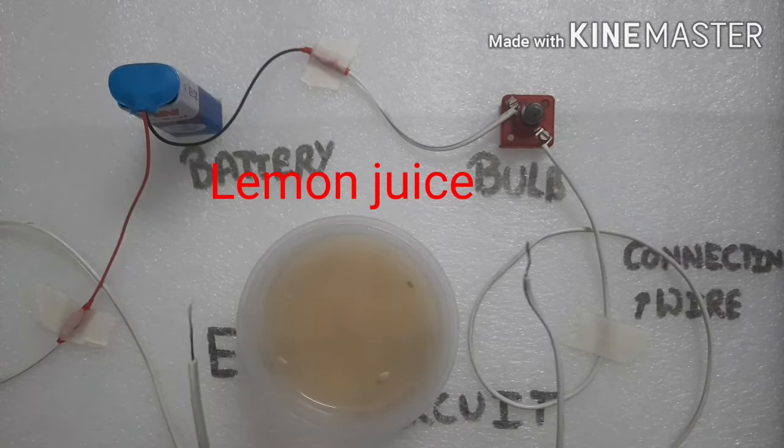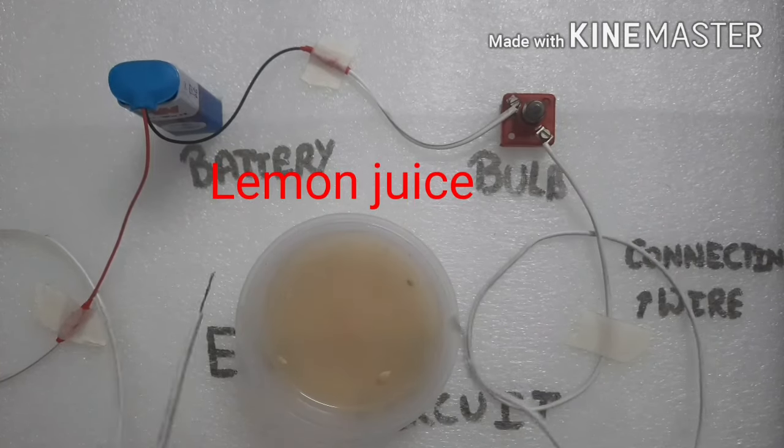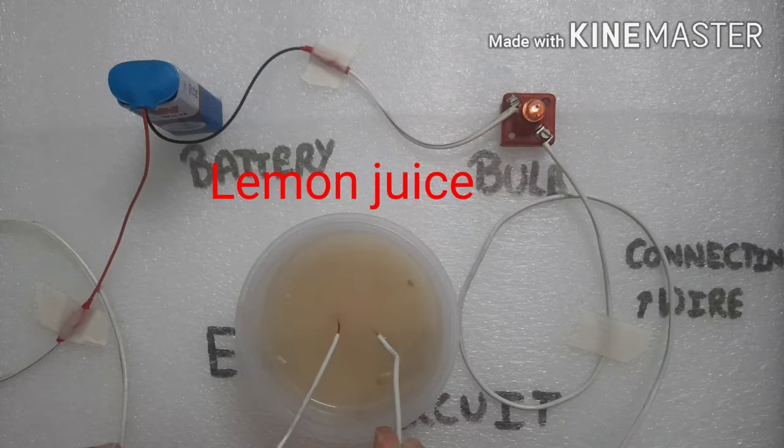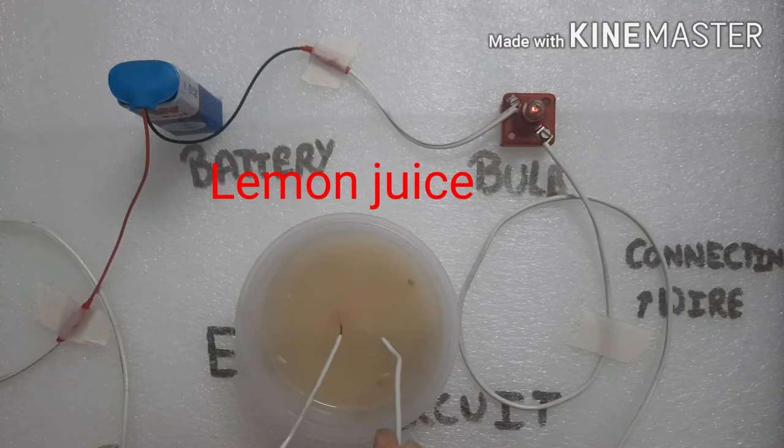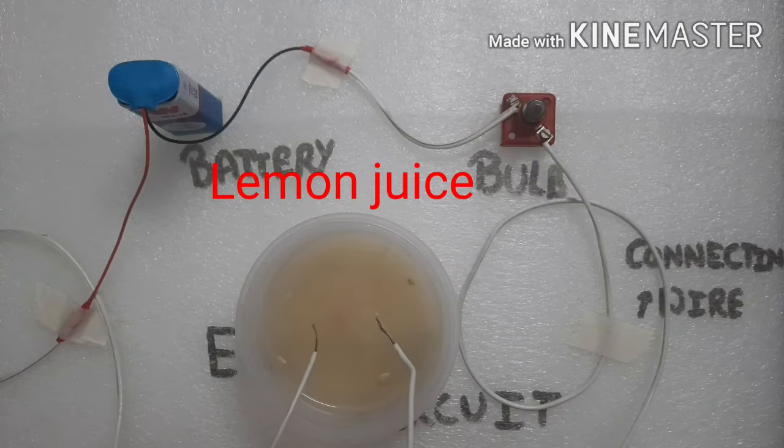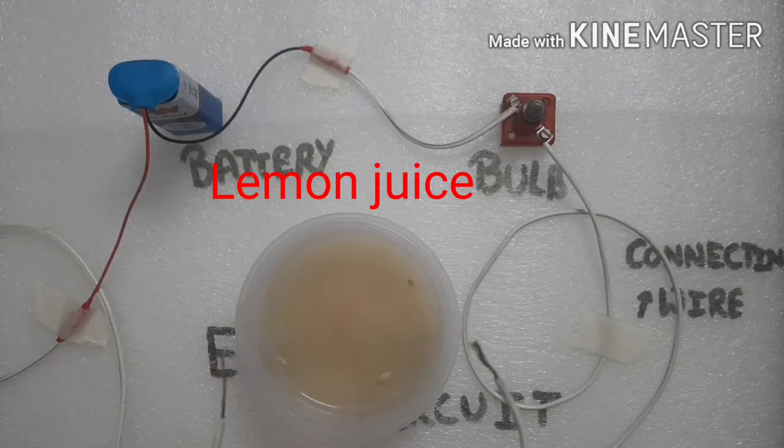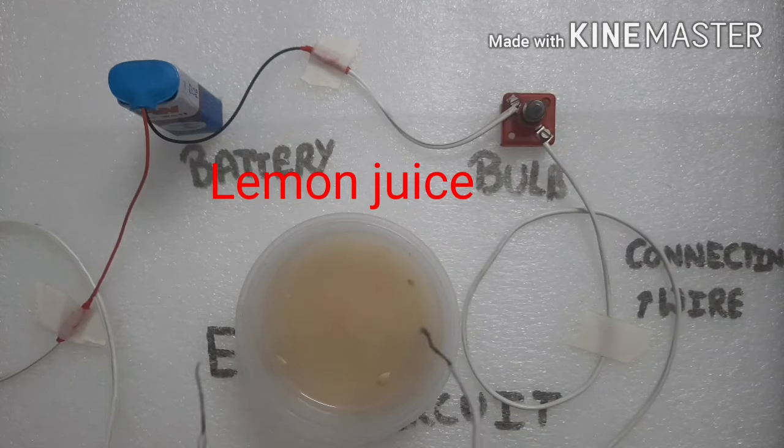So now let's put the free ends of the wire into the liquid, that is the lemon juice, and see what happens. Then after putting it in each sample, we have to just wipe off the free ends of the wire.